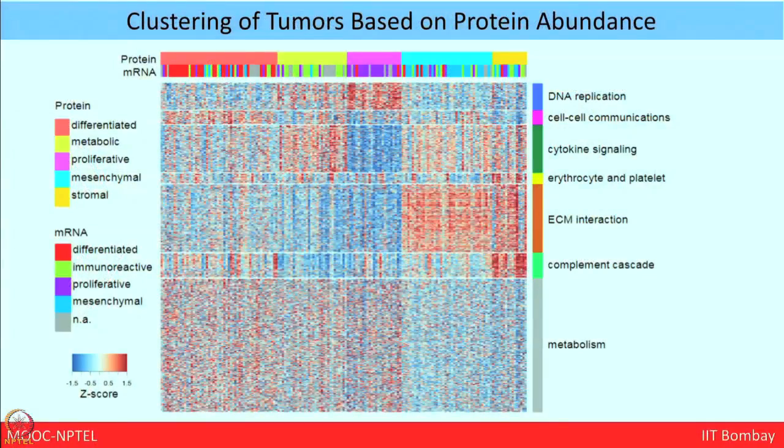Tumors were selected by examining associated TCGA metadata based on putative homologous recombination deficiency, presence of germline or somatic BRCA1 or BRCA2 mutations, BRCA1 promoter methylation, or homozygous deletion of PTEN. The clustering gives a complete landscape of different pathways involved and shows the correlation between protein and mRNA in these pathways. They also investigated how copy number aberrations (CNA) in each tumor relate to protein and mRNA correlation.